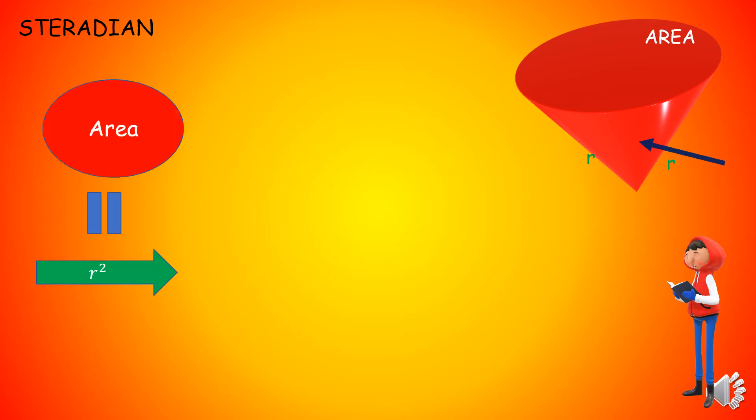When the area of the circle drawn on the surface of the sphere becomes equal to the square of the radius of the sphere, then the angle subtended at the center of the sphere is 1 Steradian.